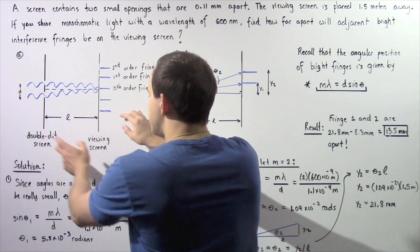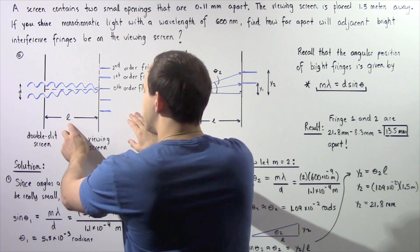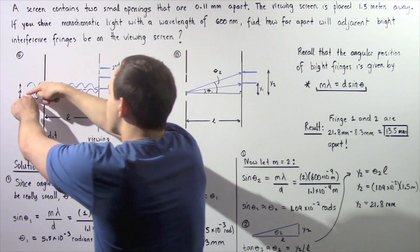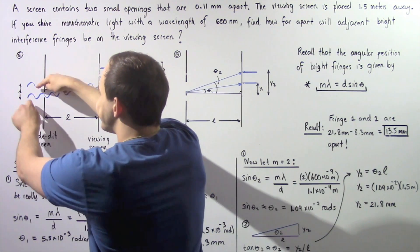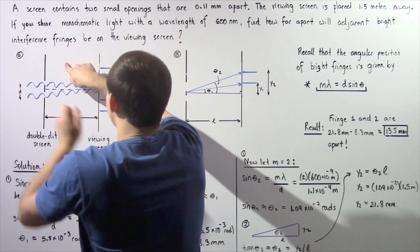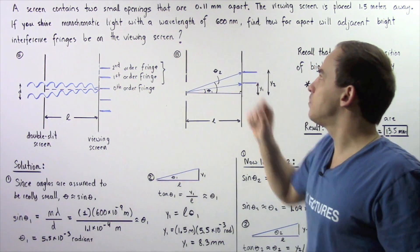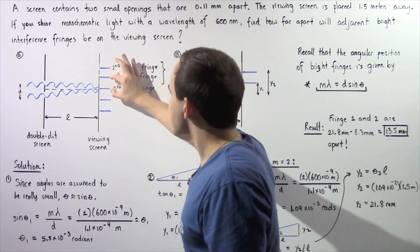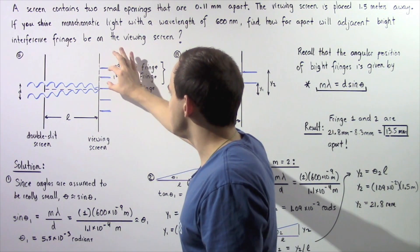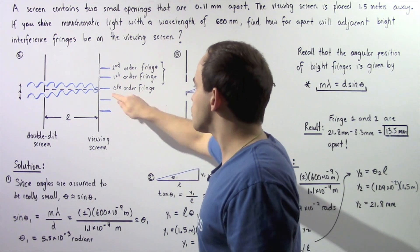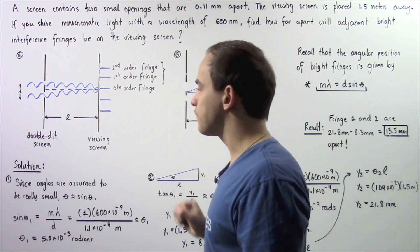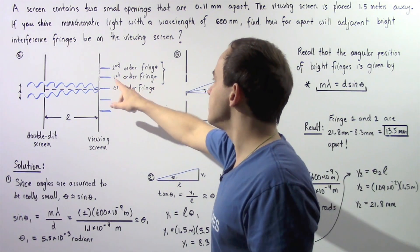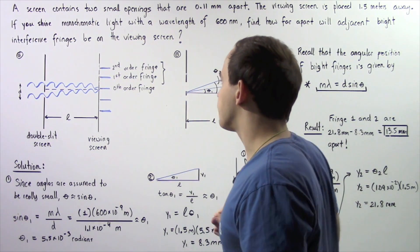The distance between the viewing screen and the double slit screen, given by L, is 1.5 meters. The separation distance between the two openings, given by D, is equal to 0.11 millimeters. We essentially want to find the separation distance between any of these fringes. The center fringe is known as the zeroth order fringe, this is the first order fringe, and this is the second order fringe.